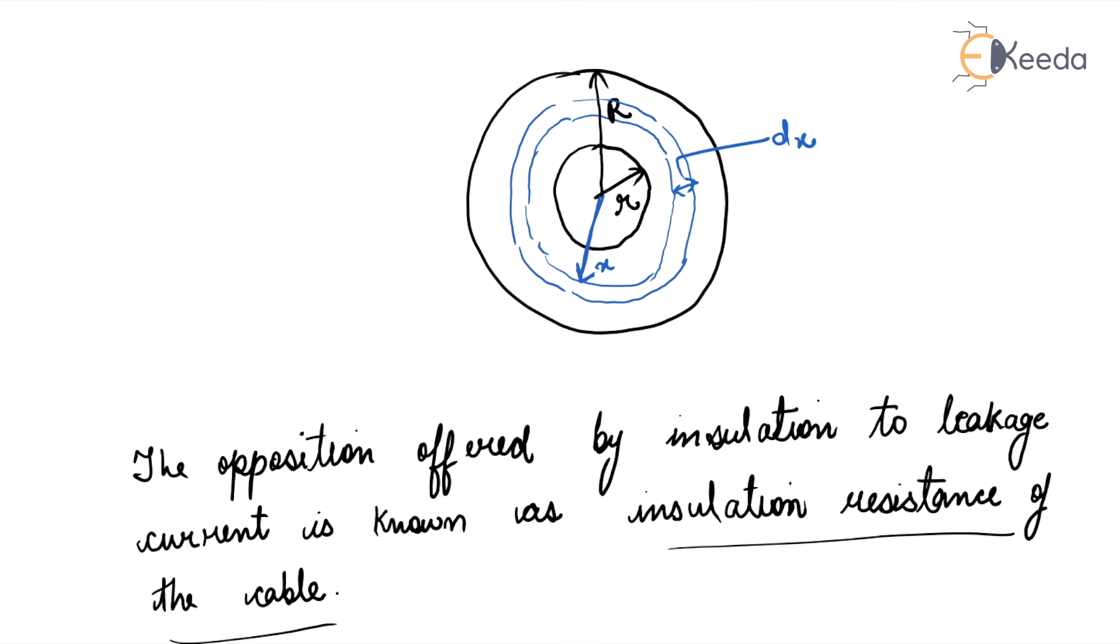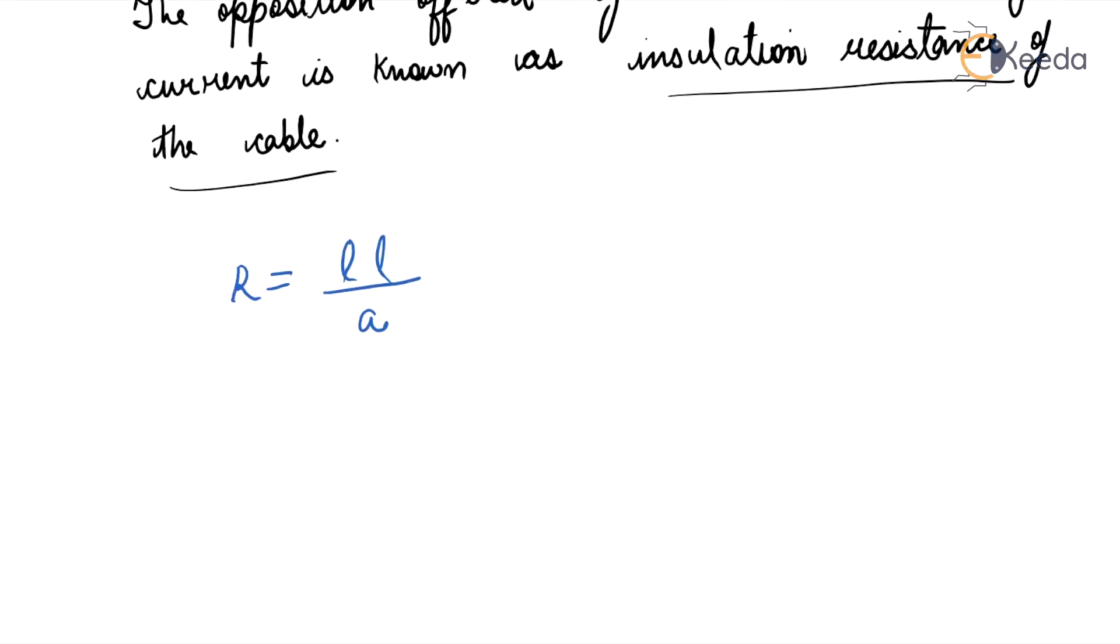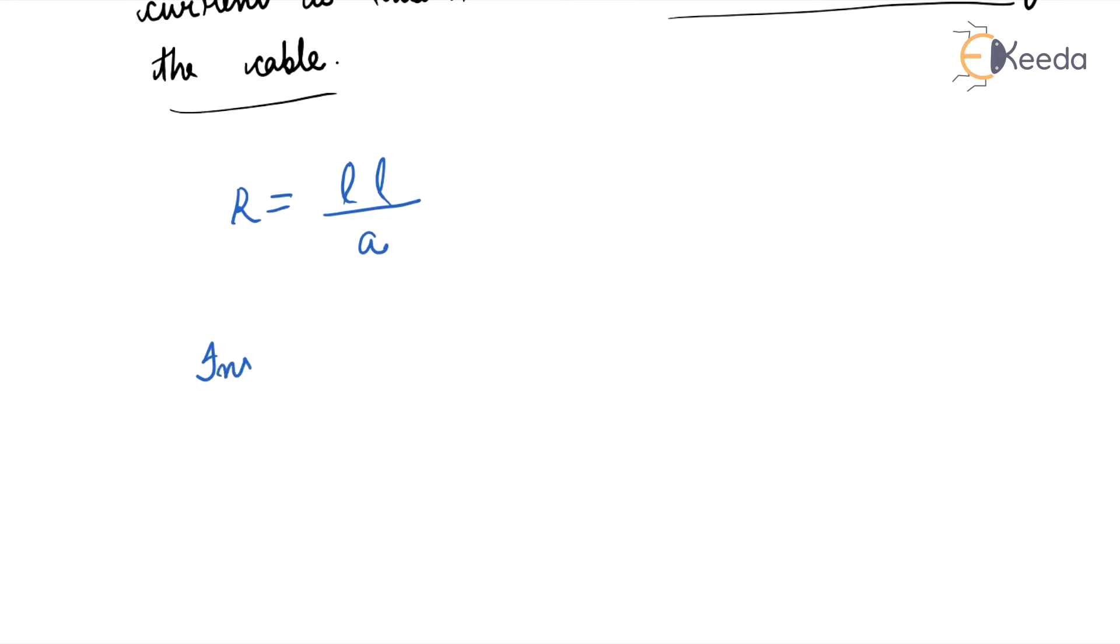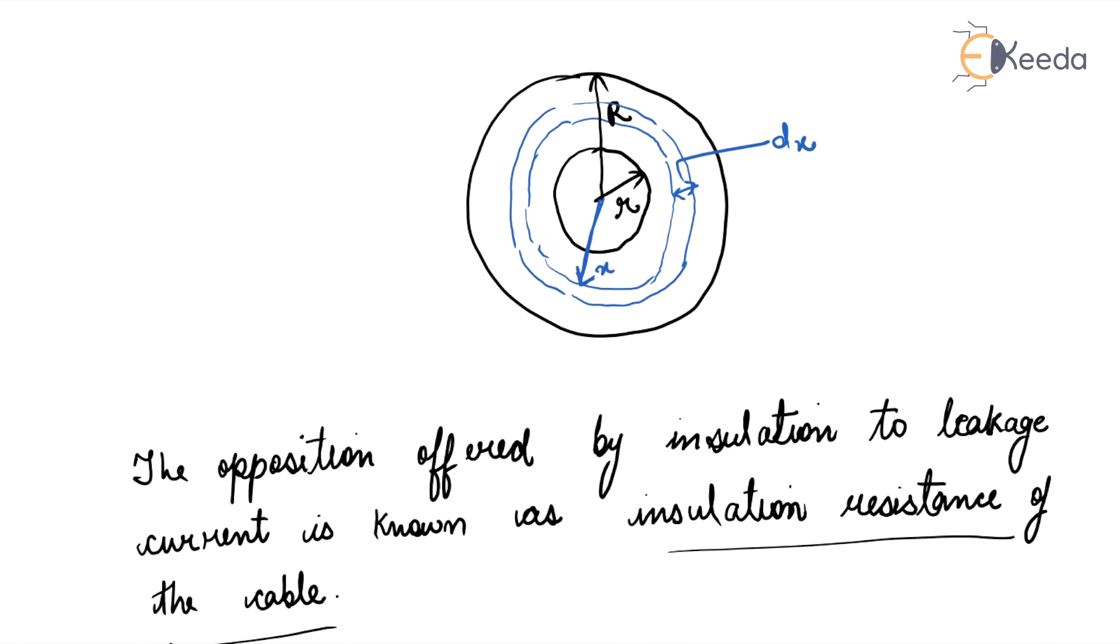For a small layer of insulation of thickness dx at radius x, the insulation resistance of this considered layer equals ρ dx divided by the area.